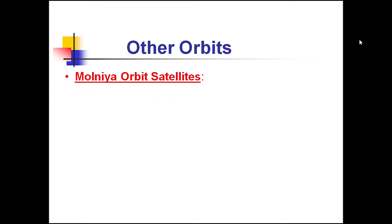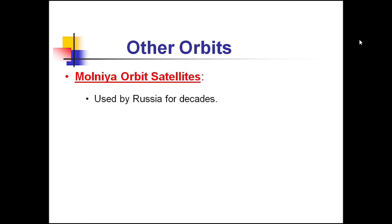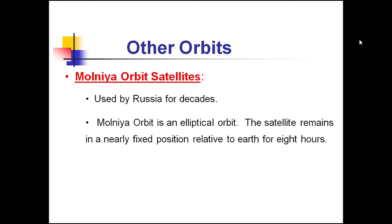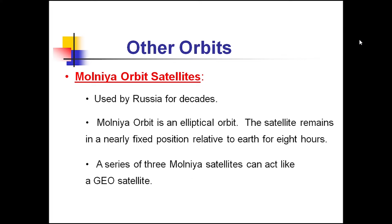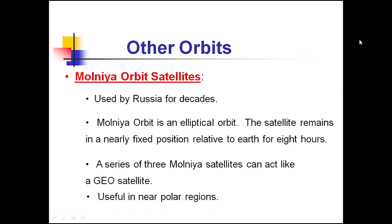Other orbits include Molniya orbit satellites, which are used by Russia. It is an elliptical orbit where the satellite remains in a nearly fixed position relative to Earth for 8 hours. A series of 3 Molniya satellites can act like one geostationary satellite. It is useful in near polar regions.